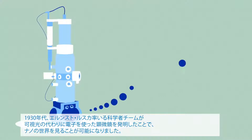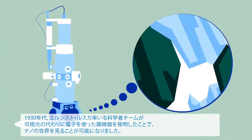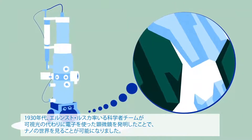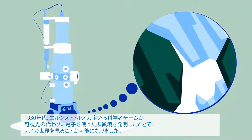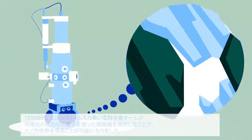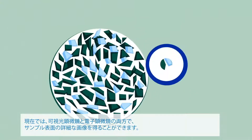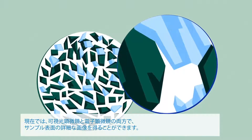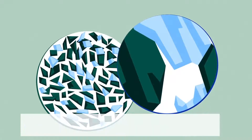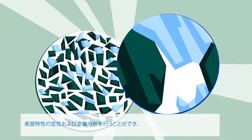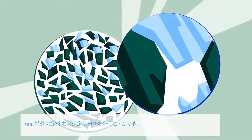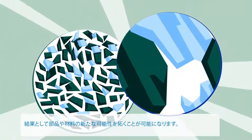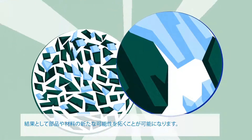A view into the nanoworld became possible in the 1930s, when a team of scientists led by Ernst Ruska invented a microscope using electrons instead of visible light. Both visible light and electron microscopy provide detailed images of a sample surface, and qualitative and quantitative analysis of surface properties can be performed. These results allow components and the materials they are made of to be pushed to new limits.